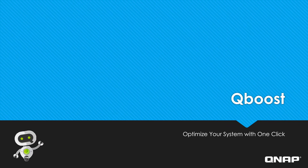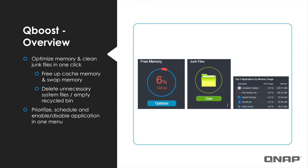So let's talk about QBoost and take a closer look at how it works. QBoost optimizes your memory by freeing up cache memory and swap memory, and frees up storage space by deleting unnecessary system files and emptying the recycle bin. QBoost also enables you to easily enable apps, disable apps, or set a schedule for the running of your apps.